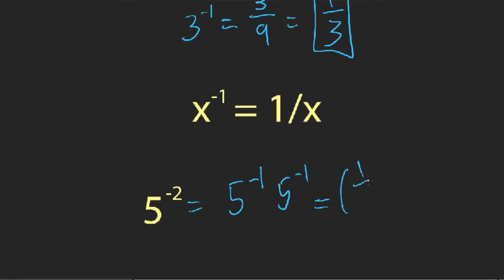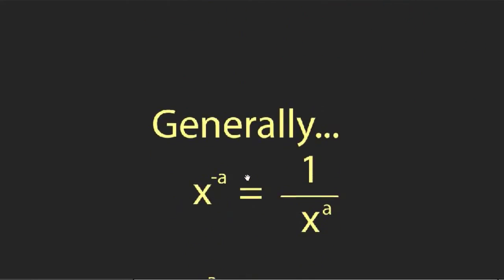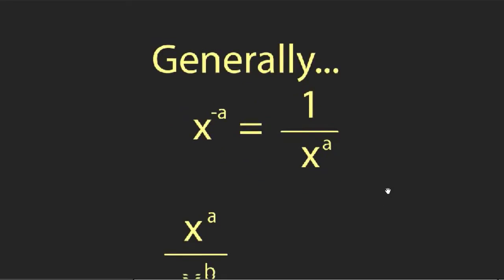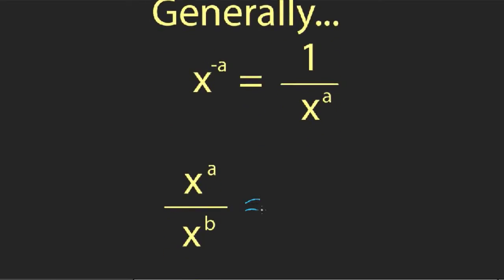What about a negative power like negative two? Five to the negative two equals five to the negative one times five to the negative one, since those exponents add up to negative two. That becomes one-fifth times one-fifth, or one over five squared. So the general rule is: x to the negative a power becomes one over x to the a. You can think of it as taking the reciprocal and then raising x to the positive version of that power. This also gives us the division rule: x to the a over x to the b equals x to the a minus b.